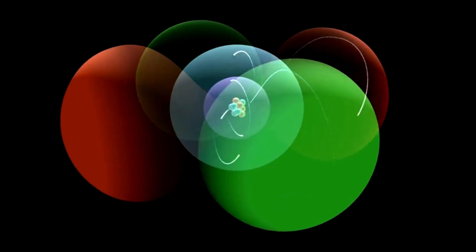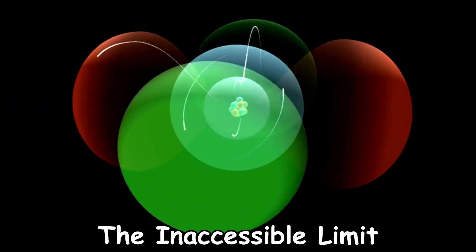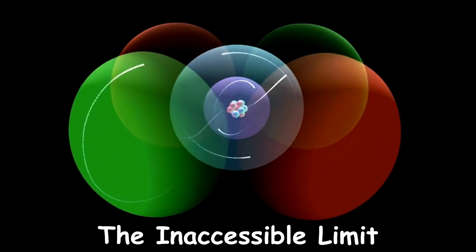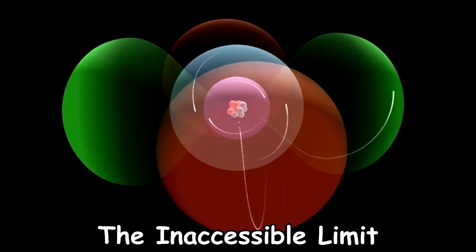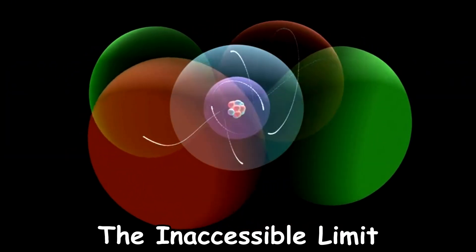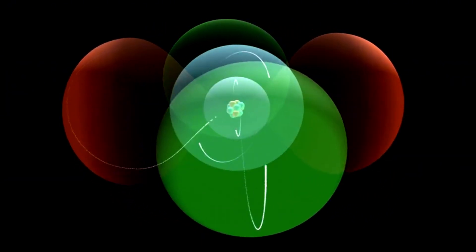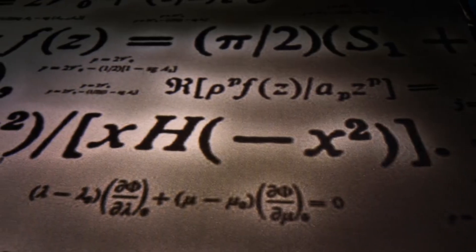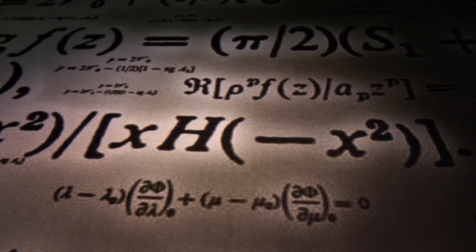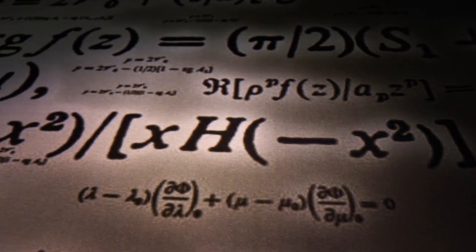No observer with mass can reach light speed, making this limiting perspective forever inaccessible to direct experience. It remains a mathematical boundary where relativity's equations hold but human intuition fails.